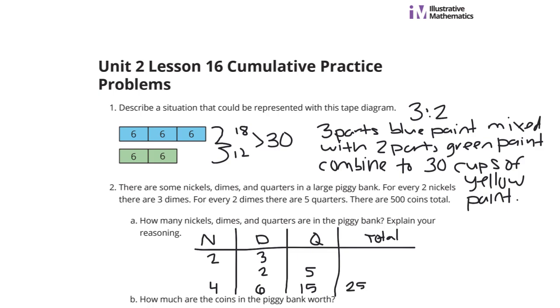Now, I'm trying to get that 25 to be up to 500. How do I get from 25 to 500? Well, it's going to be multiplying by 20. So if I take each of these and multiply by 20, I'll end up with my solution. So it's going to be 4 times 20 is 80 nickels. 6 times 20 is 120 dimes. And 15 times 20 is 300 quarters.